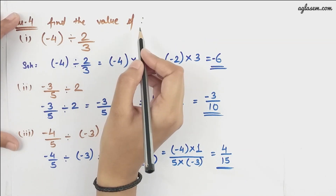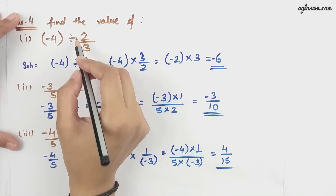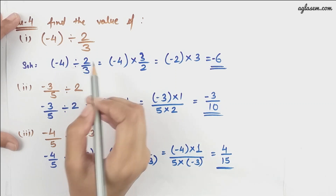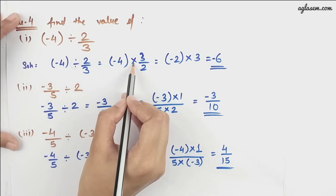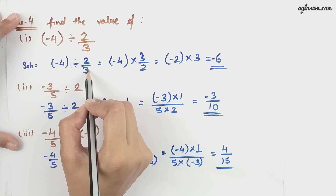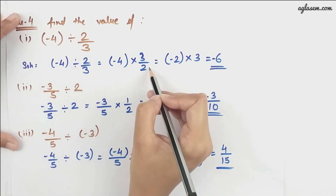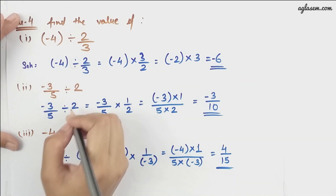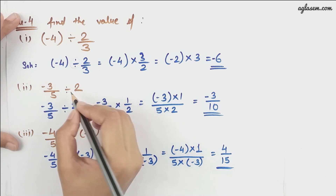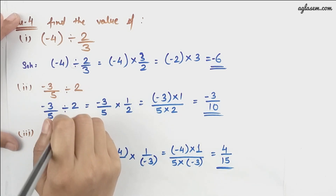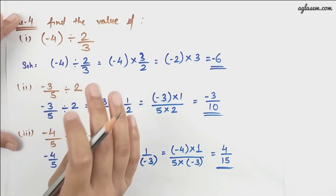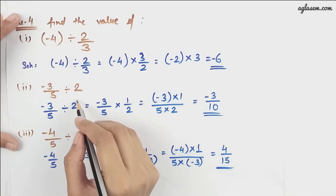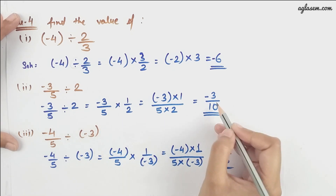Our next question is: find the value of -4 divided by 2/3. To change the division to multiplication, we reciprocal 2/3 to 3/2, and from there the solution is -6. The next is -3/5 divided by 2. We change the sign and reciprocal the value the same way, giving us -3/10.